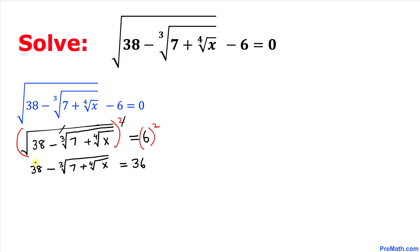Once we move that thing, so that is going to give us the cube root of 7 plus the fourth root of x equal to 36 minus 38. So we got the same thing on the left hand side. On the right hand side we got simply negative 2.